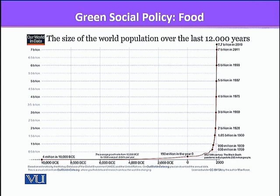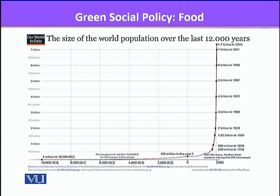This graph shows the size of world population in the last 12,000 years. In the first 11,800 years, we reached 1 billion. From 1800 on, we increased to 2 billion in around 100 years. Then we reached 3 billion in only 40 years, and now we are at 7.7 billion. This is how the world population has exploded.